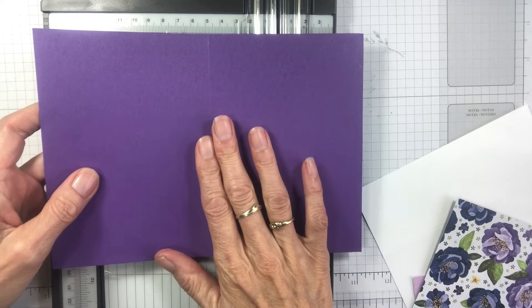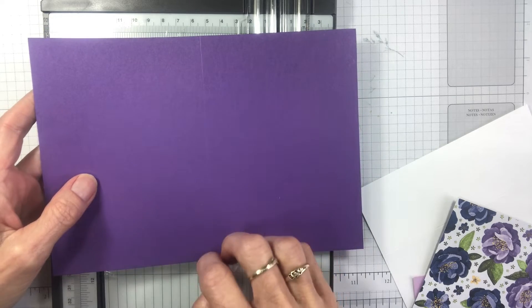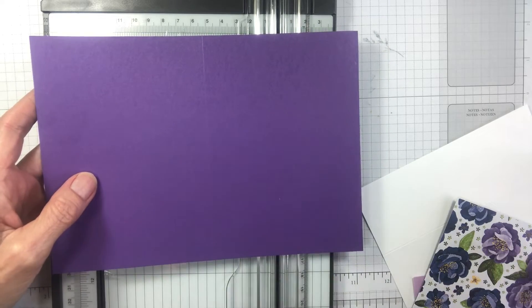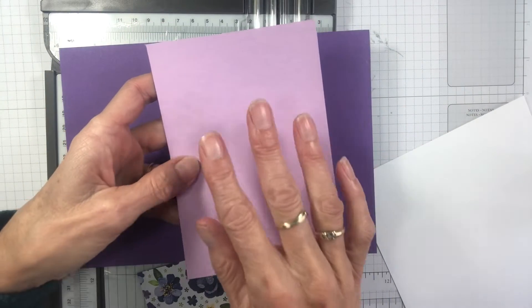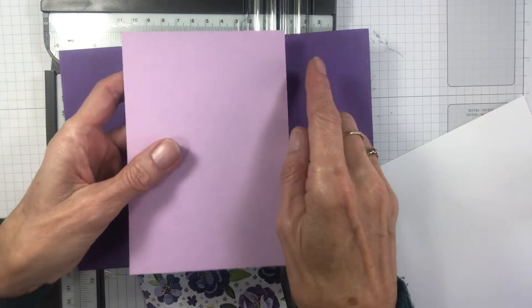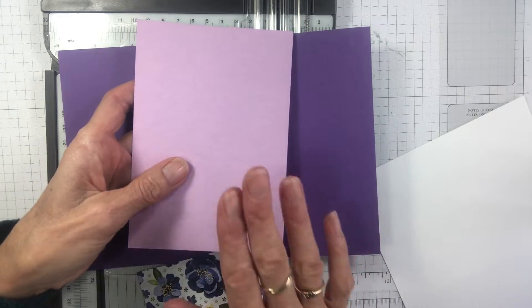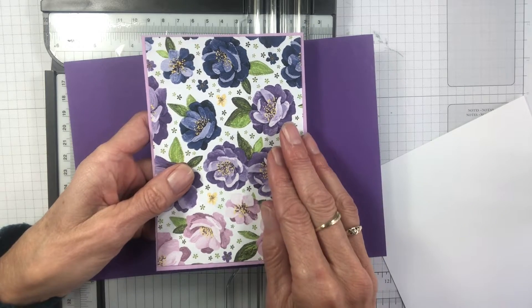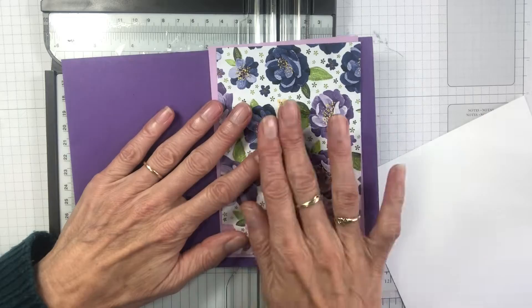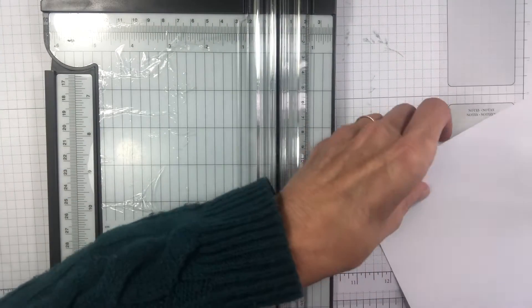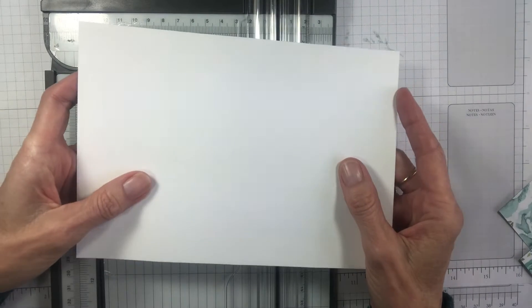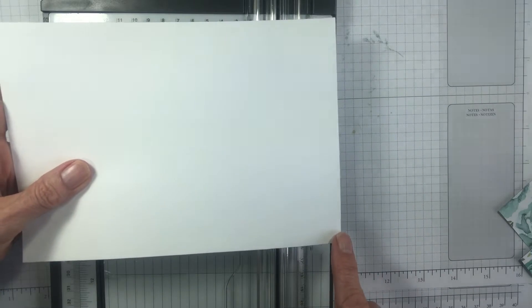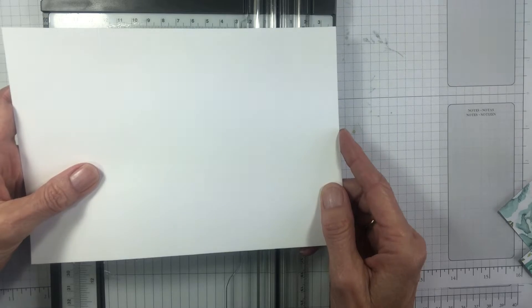So your standard base card for metric is 14.8 by 21 centimeters scoring at 10.5, or 8.5 by 5.5 score at 4.25. For your front piece you'll want a piece of coordinating cardstock 10.1 centimeters by 14.4 centimeters, so 4 1/8 by 5 3/8. Your piece of pattern paper is 9.7 by 14 centimeters or 4 inches by 5 and a quarter inches.